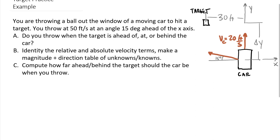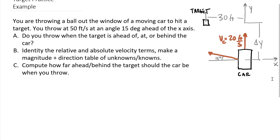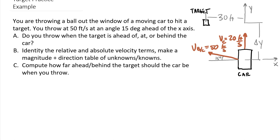The critical part is figuring out whether the 50 feet per second at 15 degrees ahead of the x-axis is the absolute or relative velocity. The way to decide is: what is it with respect to? It's with respect to you in the car. If the car were stationary it would be absolute, but the car is moving at 20 feet per second forward — so this is the relative velocity of the ball relative to the car. The absolute velocity of the ball is therefore unknown.